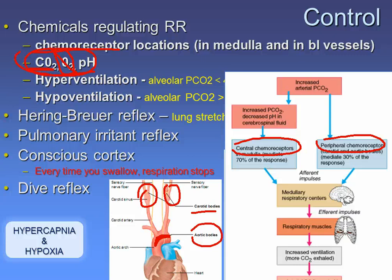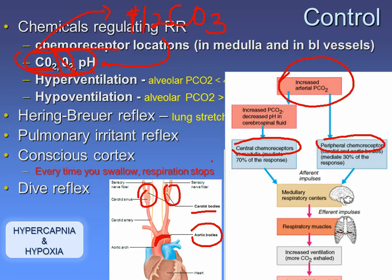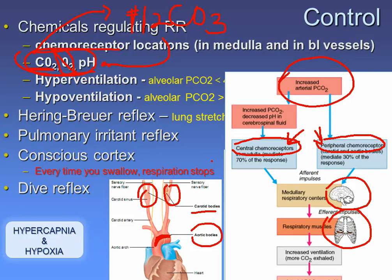There's a connection between pH and CO2: CO2 becomes carbonic acid (H2CO3), which causes a drop in pH. In a scenario where breathing is slow and CO2 is accumulating, the rising pCO2 stimulates peripheral and central chemoreceptors. They alert the medulla, which sends impulses to the diaphragm and external intercostals, increasing breathing rate to expel the extra CO2 and return to homeostasis.